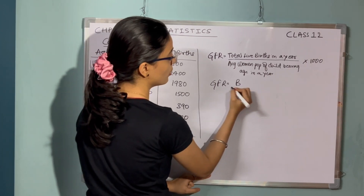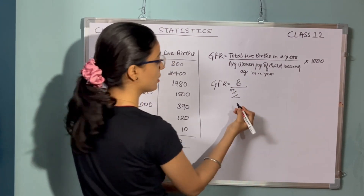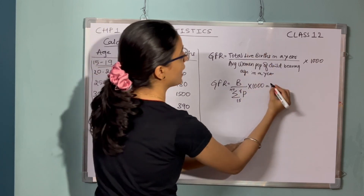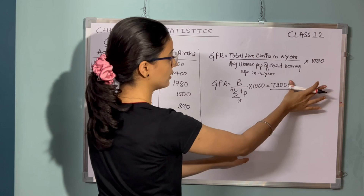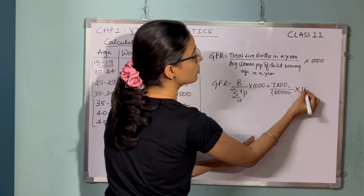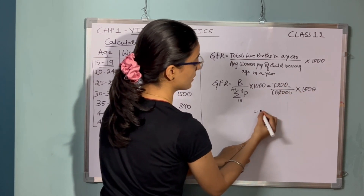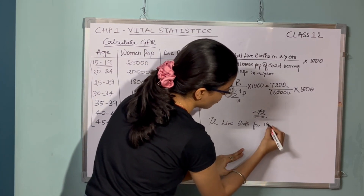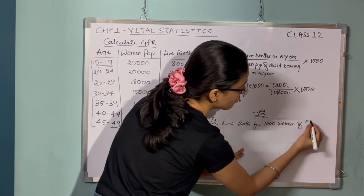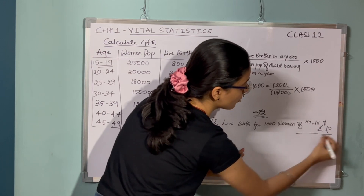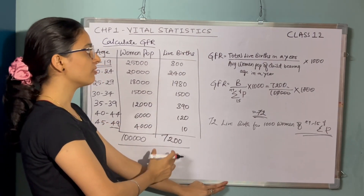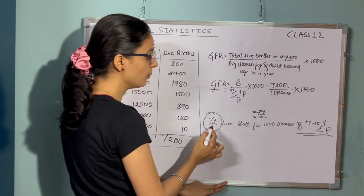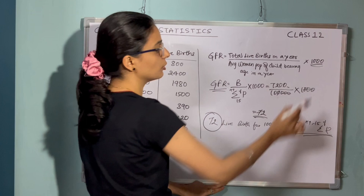The short formula is: GFR = B divided by summation of female population from 15 to 49, into 1000. Substituting: live births 7,200 divided by 1,00,000, into 1000, gives us 72. So GFR is 72 live births per 1000 women of child-bearing age. We simply take the total number of live births divided by the total number of female population, substitute the values, and find the GFR.